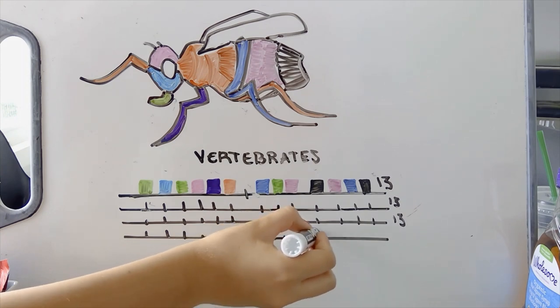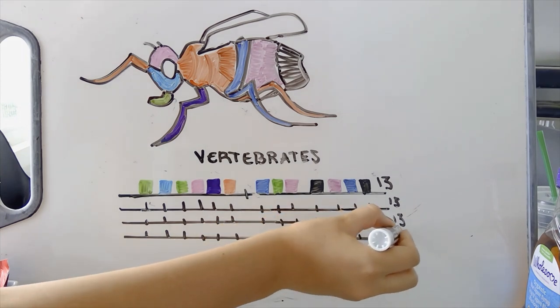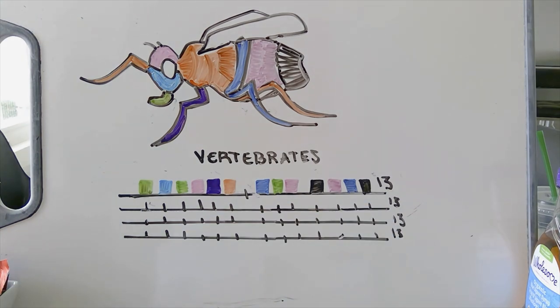Each Hox gene in the vertebrate can be sorted into one of 13 paralogous groups, meaning groups that share similar terrain in the anterior-posterior axis and have similar function in identifying body segments. Each group contains a pool of up to four genes, labeled A, B, C, or D, that need to be combined to completely establish that segment's identity.